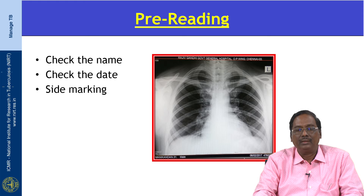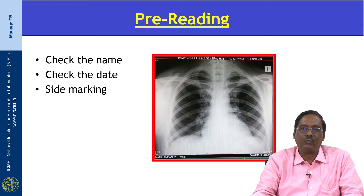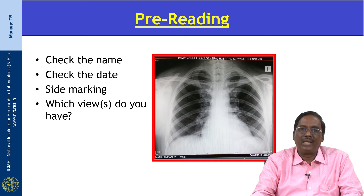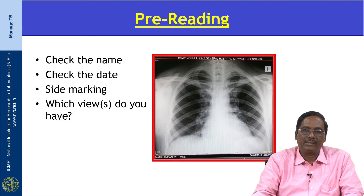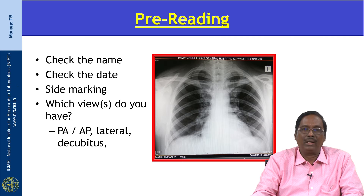Before starting interpretation, first we have to check whether it is the right film for the right patient. Then check the name, age, and sex. Sometimes a name may be shared by many individuals, so we have to look for date of birth and hospital number. Side marking is also important — a misplaced side marker is more common than true dextrocardia. There have been reports of insertion of an ICD on the wrong side of a pneumothorax because of a false side marking. We also have to check the type of X-ray: whether it is a PA view, AP view, lateral view, or lateral decubitus.